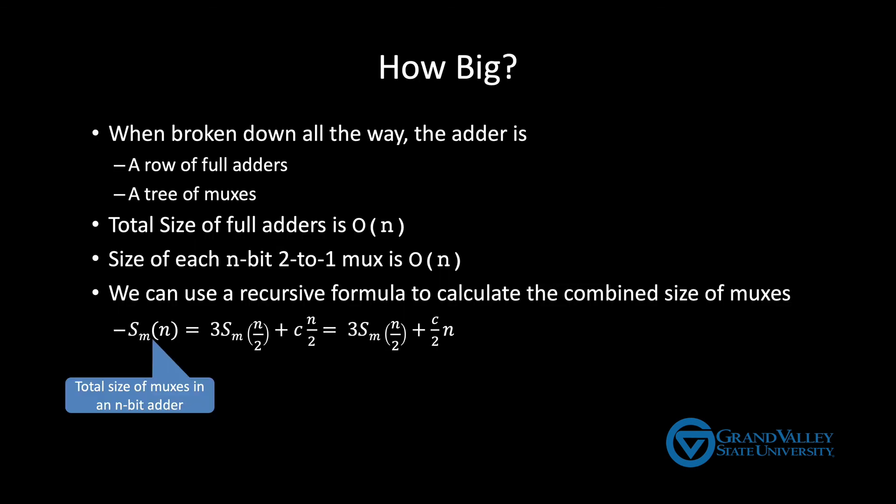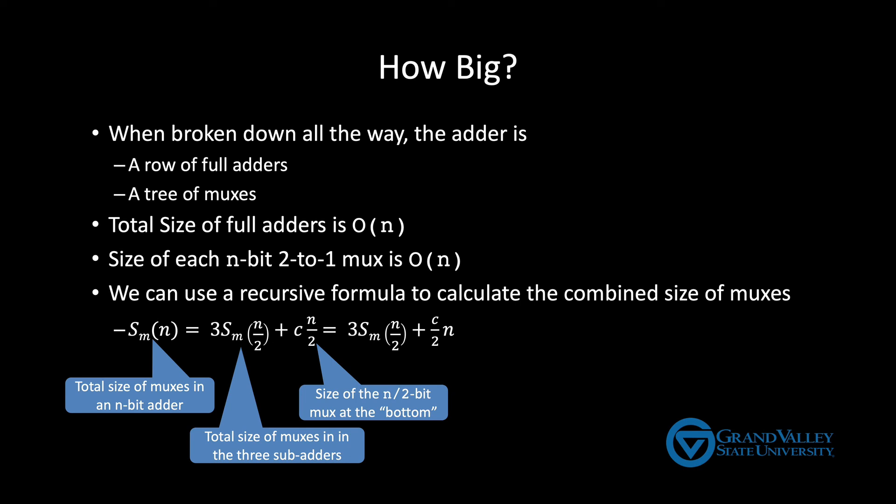So the total size of the MUXs in an N-bit adder is the size of the MUXs at the bottom, that orange N over 2-bit MUX that's putting together the final sum, plus the size of the MUXs in all three sub adders. So in this part of the expression we have a recursive term that's asking for the number of MUXs in an adder of half the size and at any given level there are three of those.